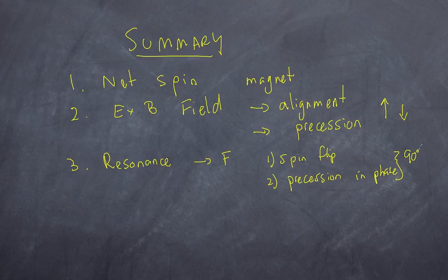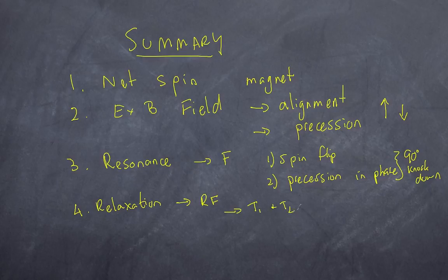That leads to a 90-degree knockdown. Number four, we have relaxation. Relaxation can be spin-spin relaxation and spin-lattice relaxation. In essence, energy is released which is picked up as a radio frequency. But the rate at which that happens, the spin-lattice and the spin-spin, leads to T1 and T2 weighting.